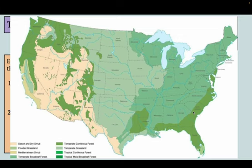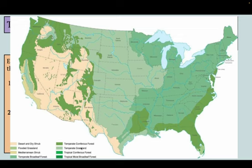We can see in the United States that we have about eight different types of biomes. Temperate and tropical really refer to the type of temperature profile, and then we have things like grasslands, forests, shrubs, and broadleaf forests — it's a whole mosaic. For homework, you're going to be exploring two different locations that have a different ecosystem profile than the temperate broadleaf forest seen in Vermont and most of New England.